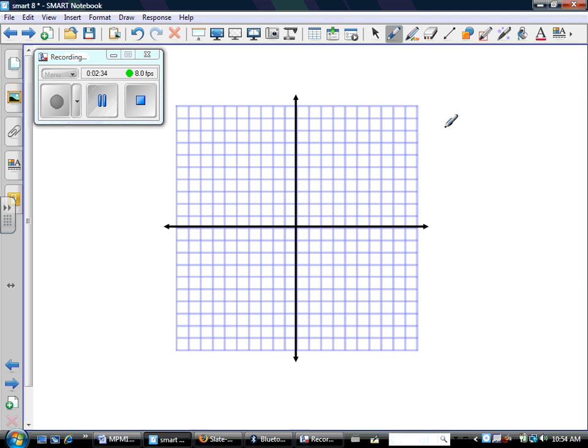Every equation that looks like this with 0 for A, something for B, and something for C will result in a horizontal line.